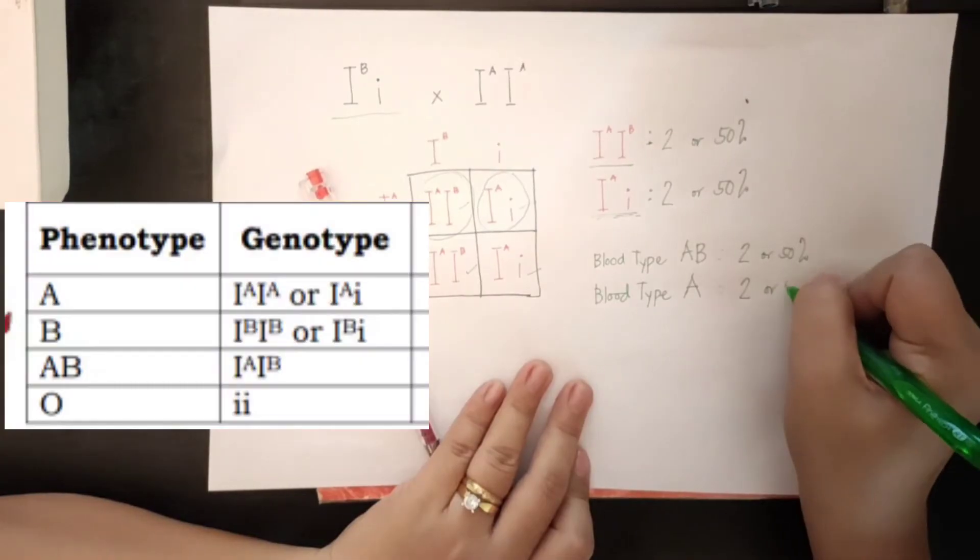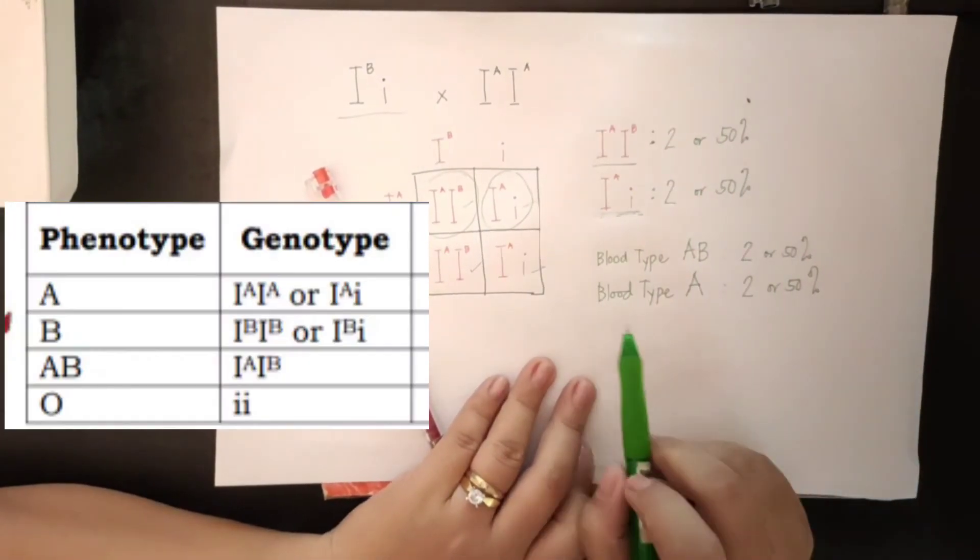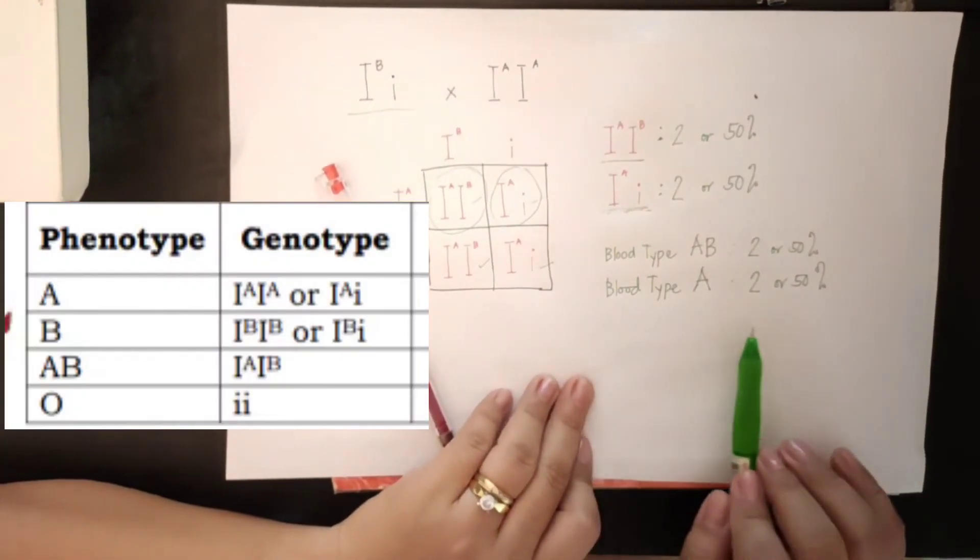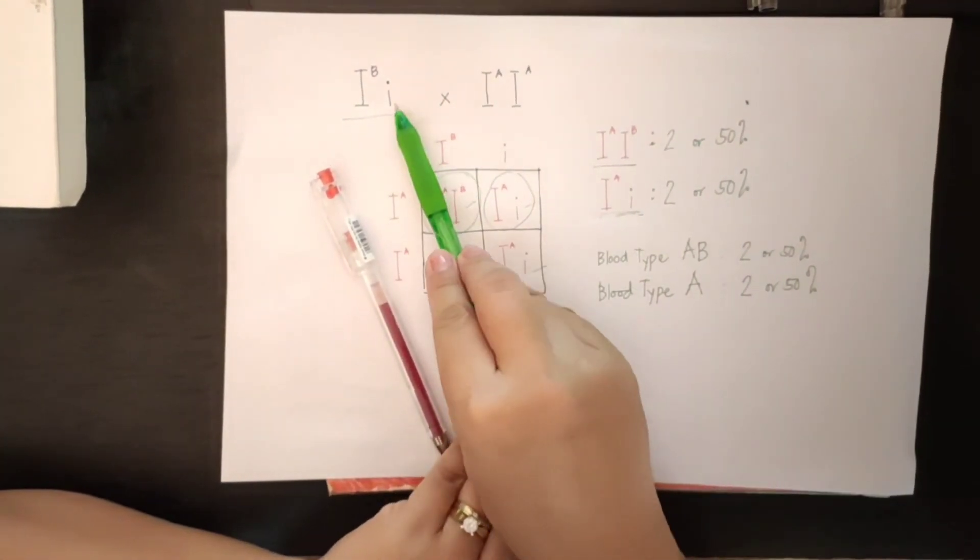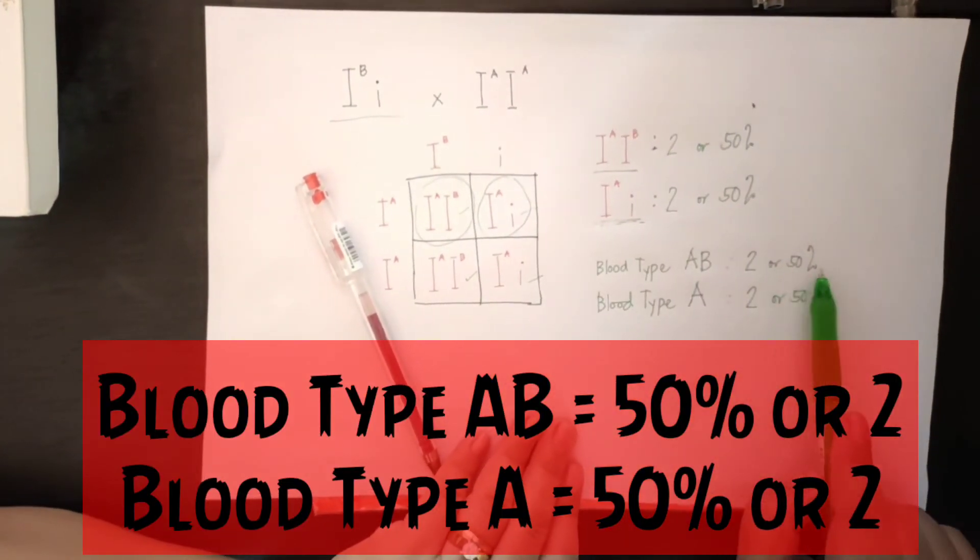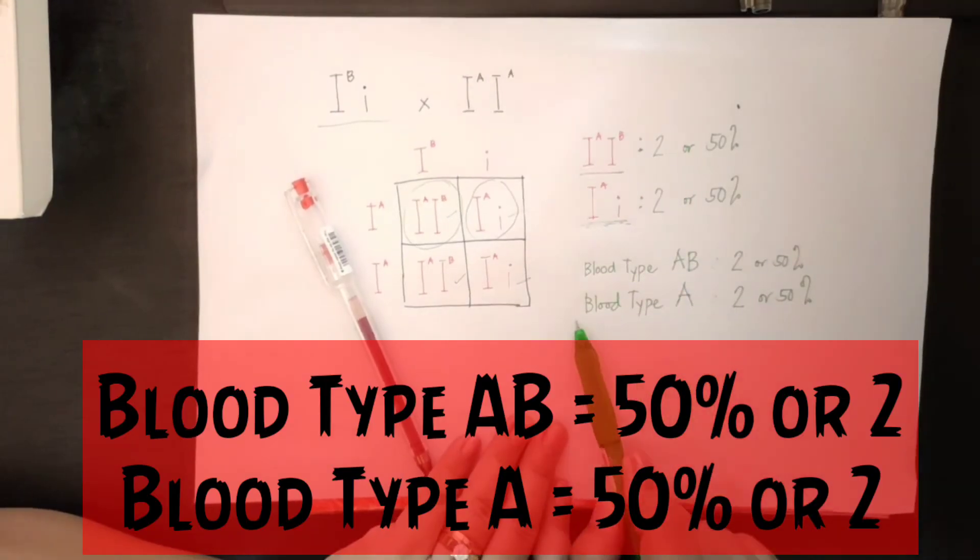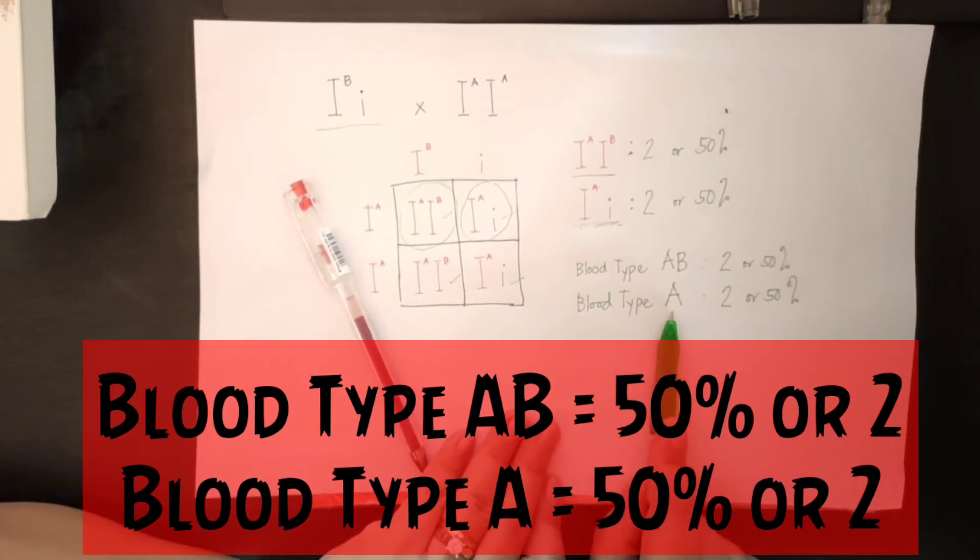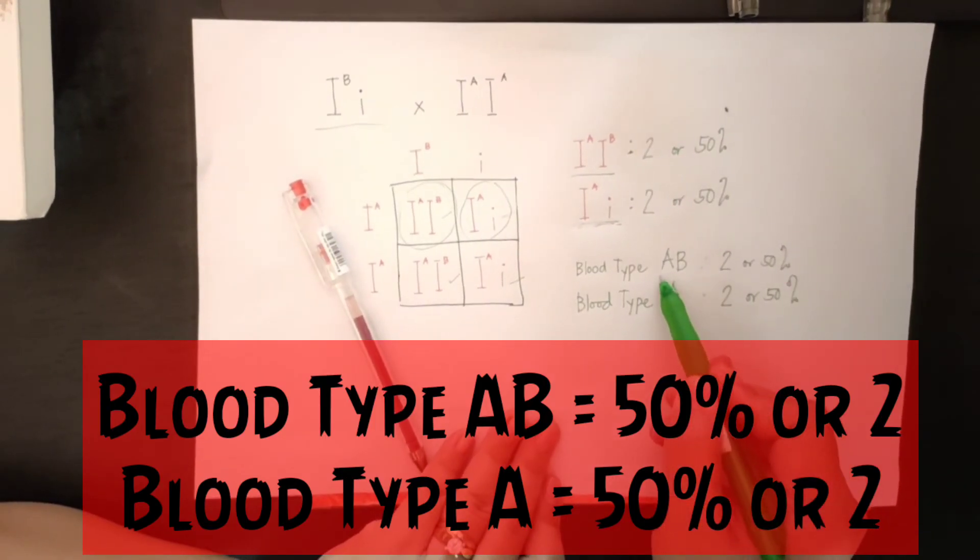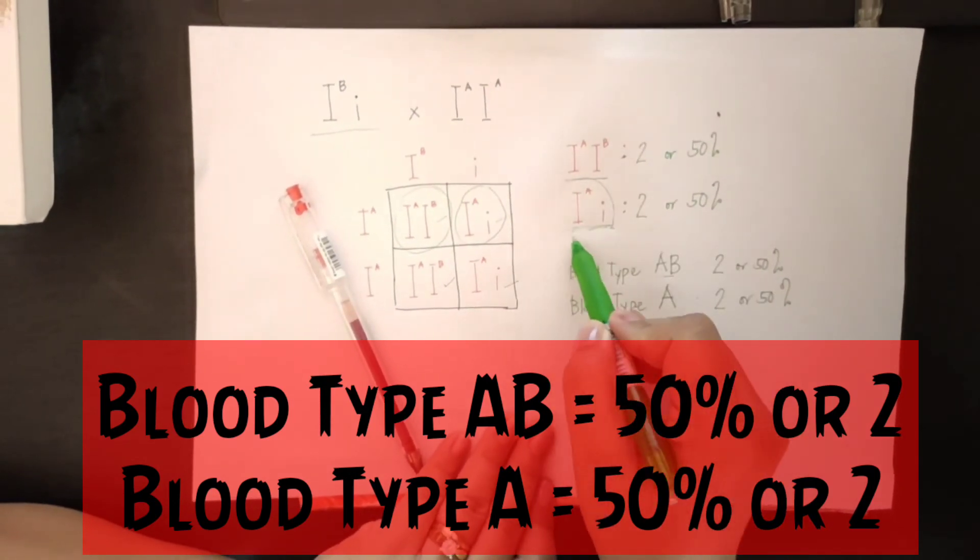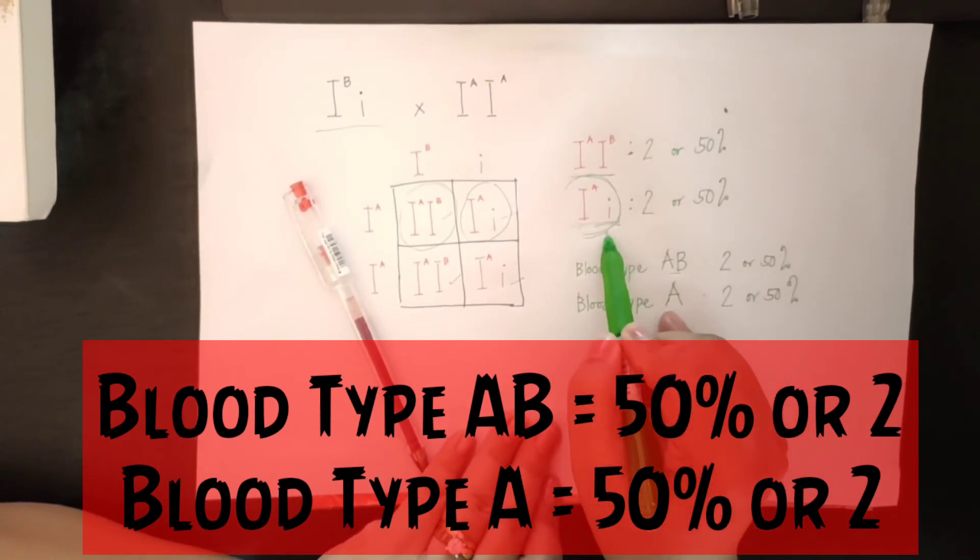So, therefore, the answer for this problem, the possible blood types of the babies of Brad Pitt and Angelina Jolie, they could have 50% blood type AB. And some of the babies could have 50% blood type A. This is blood type AB, a co-dominant trait,